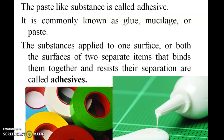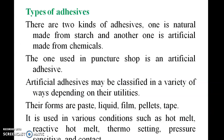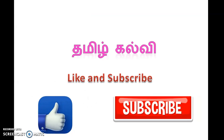The plastic paste-like substance is called adhesive, commonly known as glue, mislaid, or paste. Structures applied to some surface or both surfaces of two separate items that bind them together and resist their separation are called adhesives. There are two kinds of adhesives: natural and artificial. The one used in puncture shops is artificial adhesive. Artificial adhesives may be classified into a variety of types depending on their utility. Their forms are paste, liquid, film, pellets, and tape. Thank you — we will see more in the next lesson.